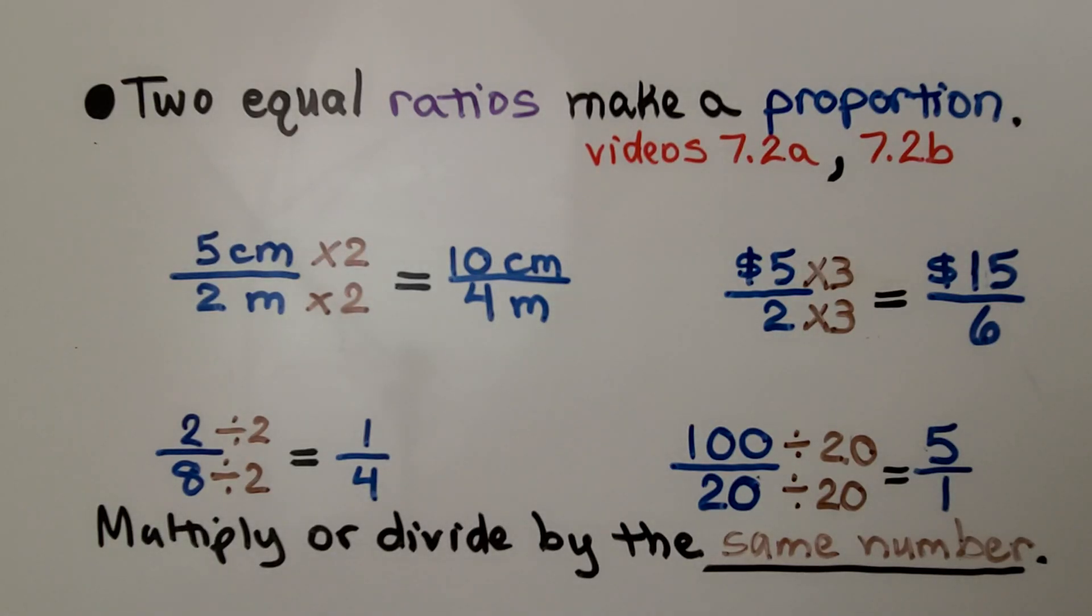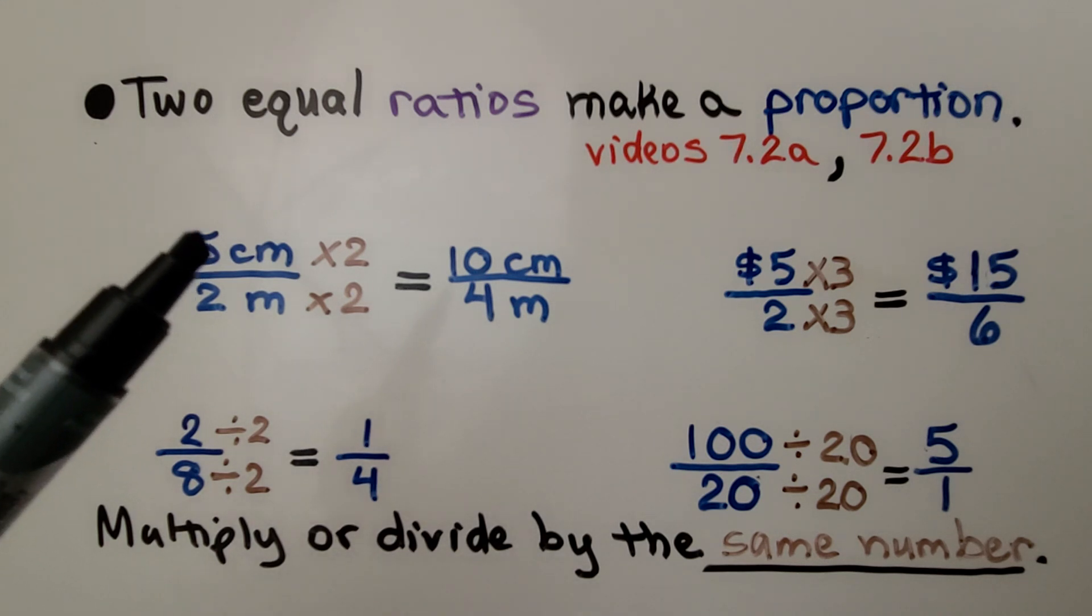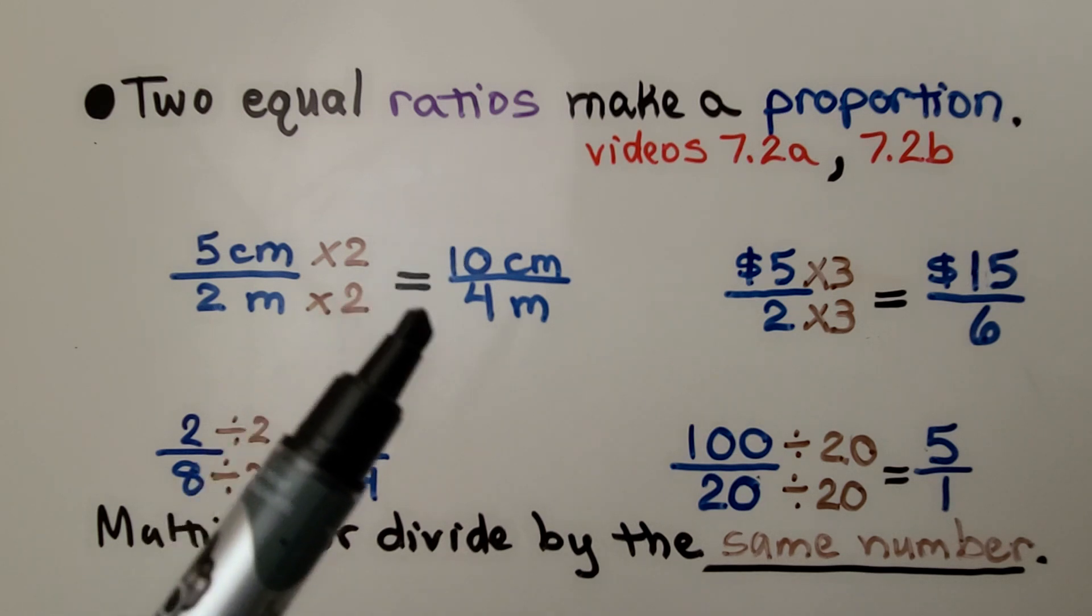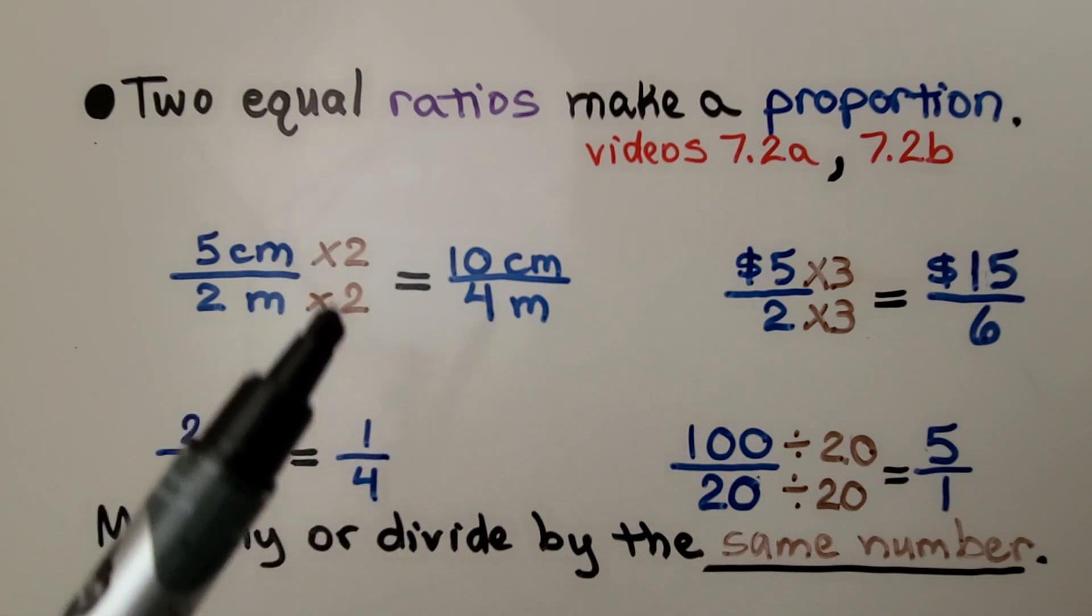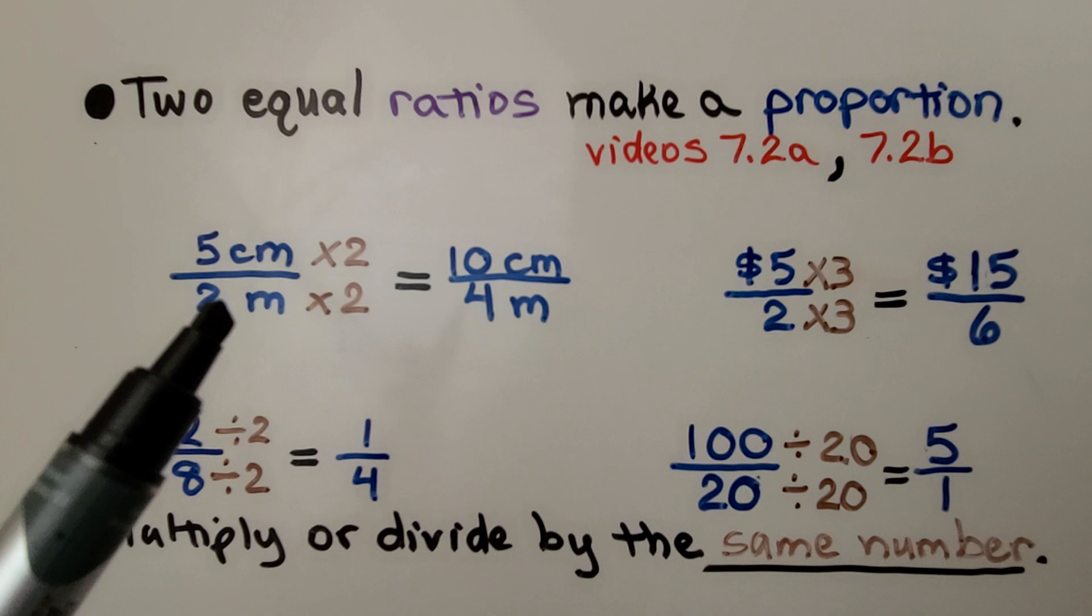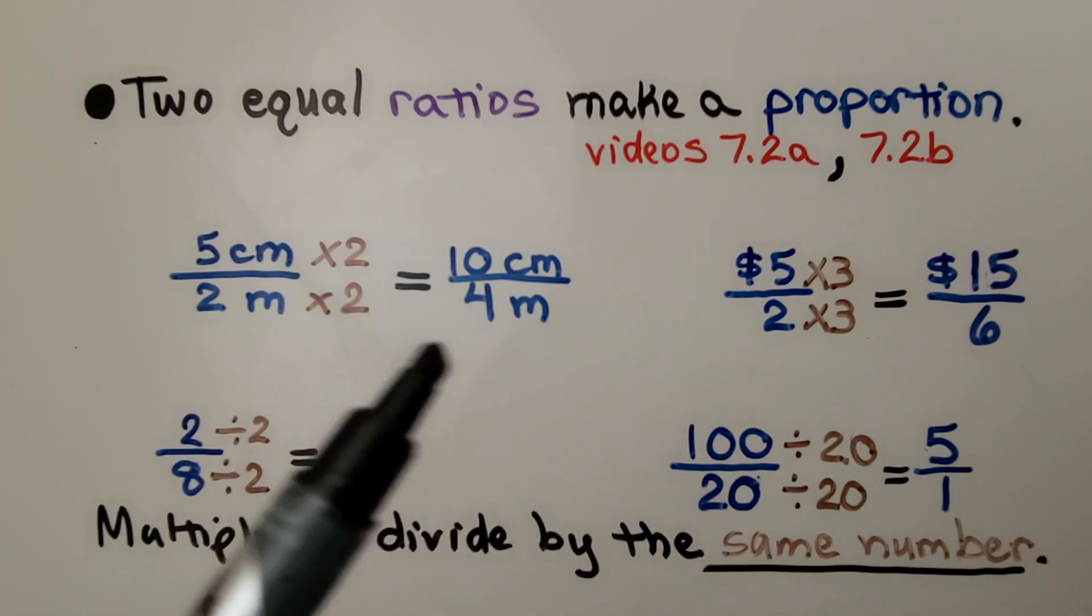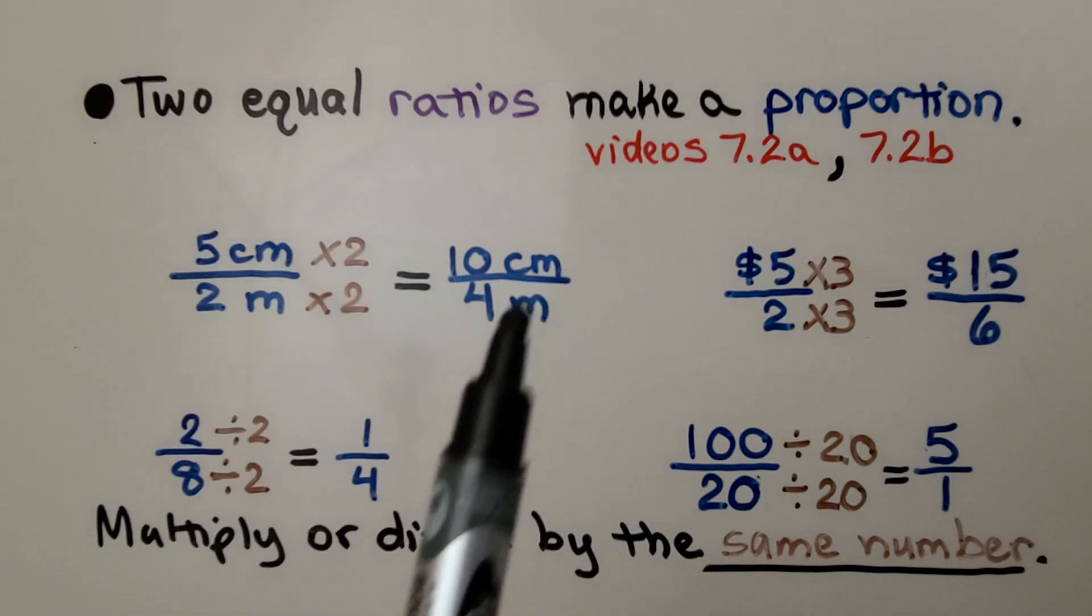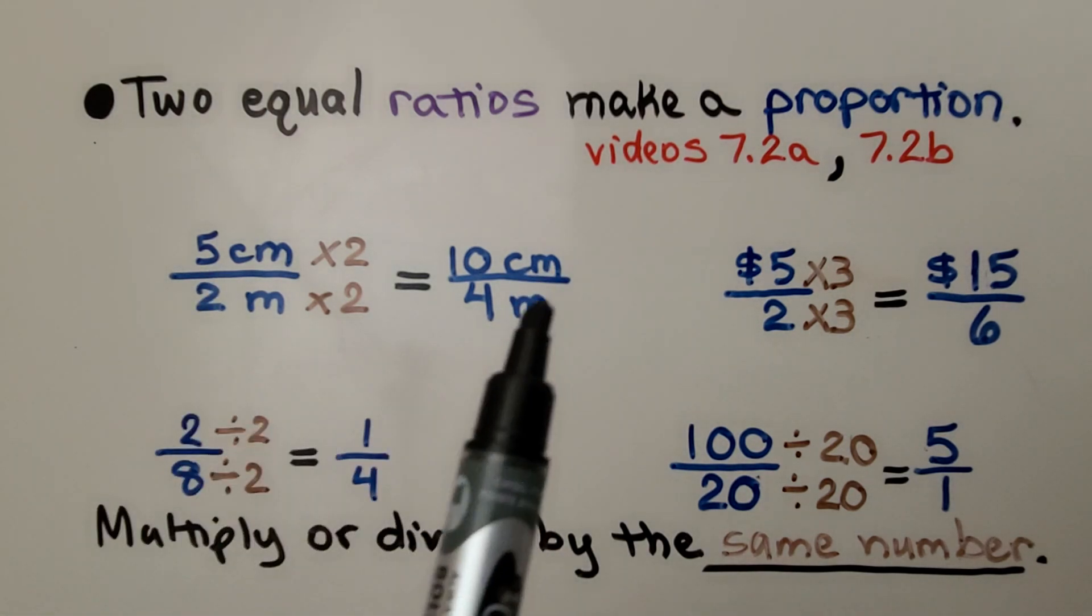So remember that two equal ratios make a proportion. We learned about that in lesson 7.2a and 7.2b. If we have a ratio of 5 centimeters to 2 meters, it's equal to 10 centimeters to 4 meters. We multiply by the same number. We need 2 times 2 to be 4, so we multiply this times 2 to get 10. We multiply or divide by the same number. These two ratios are equal to each other, so they make a proportion.